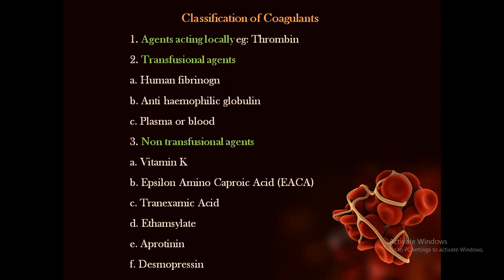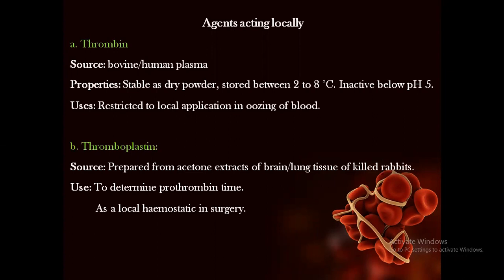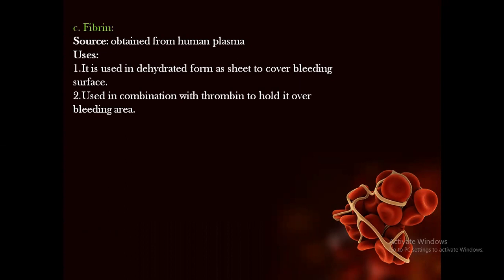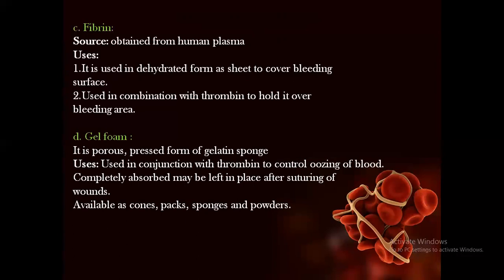Agents acting locally include thrombin, obtained from human or bovine plasma, used by local application to restrict oozing of blood. Thromboplastin is prepared from acetone extracts of brain or lung tissue of killed rabbits; used to determine prothrombin time and as a local hemostatic in surgery. Fibrin, obtained from human plasma, is used in dehydrated form as a sheet to cover bleeding surfaces and in combination with thrombin. Gel foam is a porous pressed gelatin sponge used with thrombin to control oozing of blood, available in cones, packs, sponges, and powder forms.